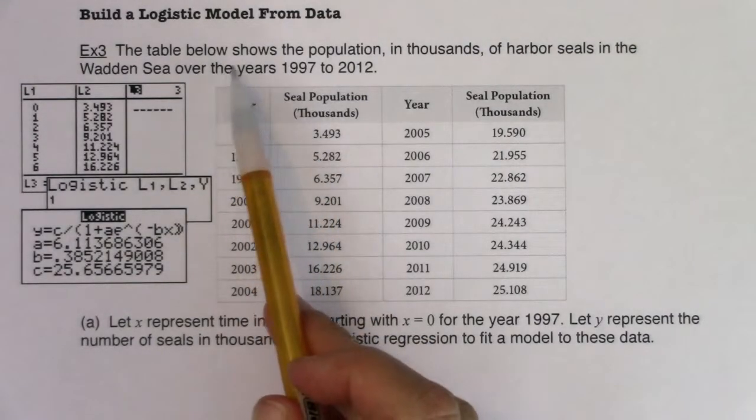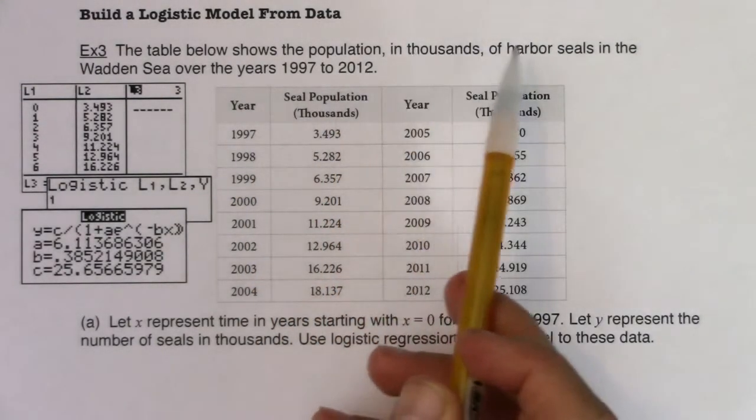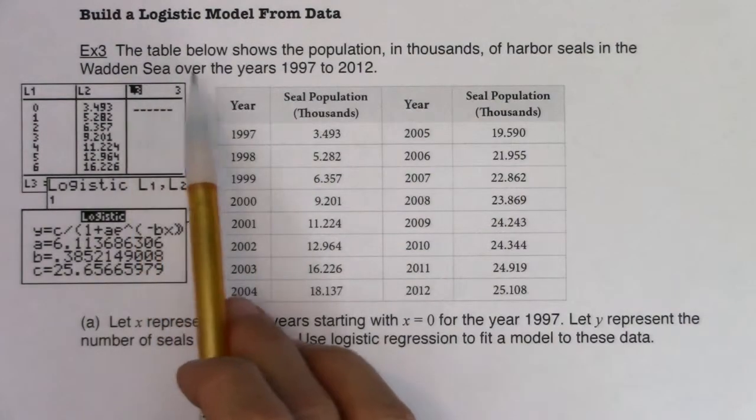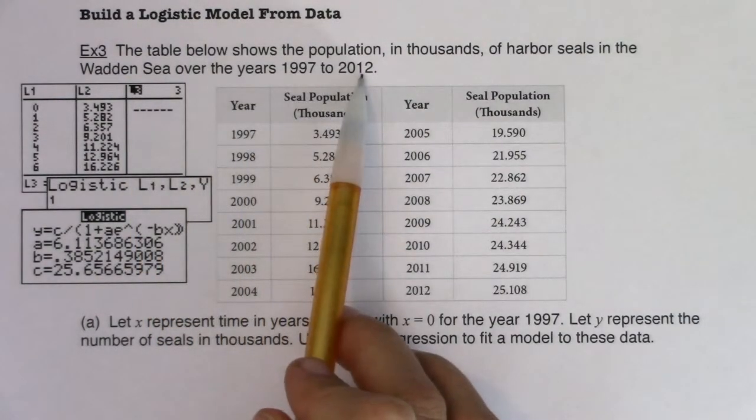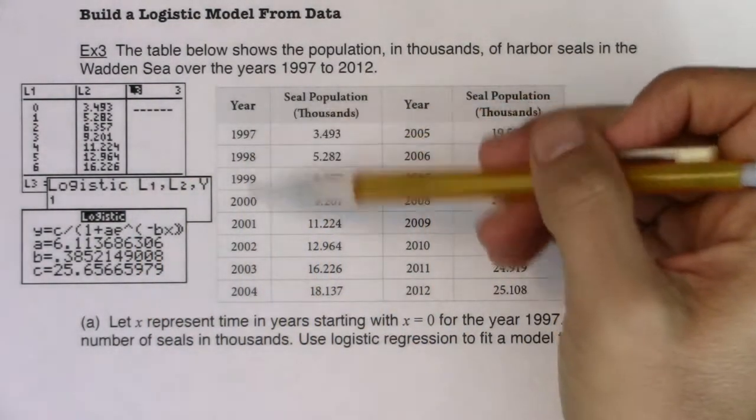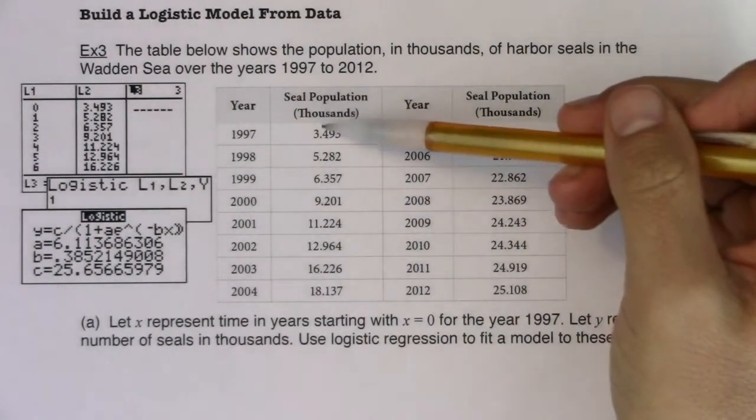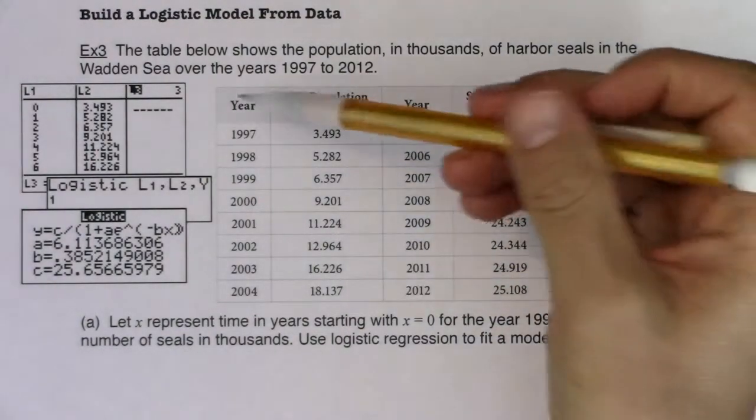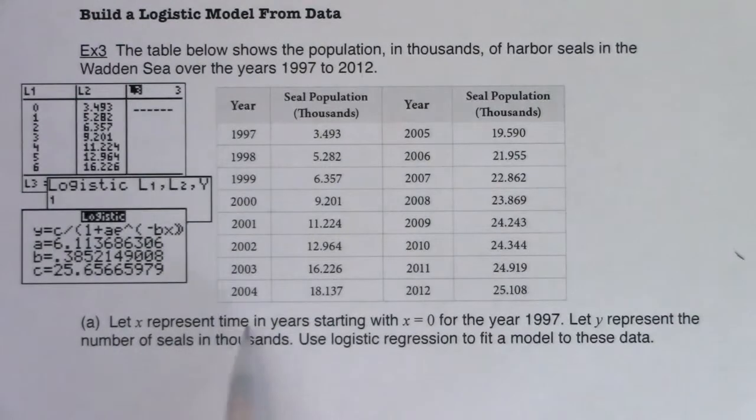The table below shows the population in thousands of harbor seals in the Wadden Sea over the years 1997 to 2012. I've got a bunch of year information here and then the population of the seals. Let X represent time in years starting at X equals 0 for the year 1997. Let Y represent the number of seals in thousands. Use logistic regression to fit a model to these data.